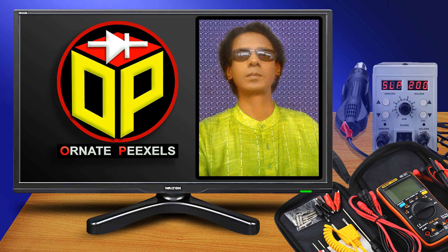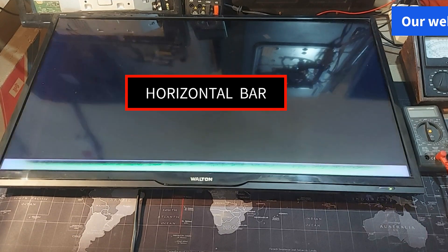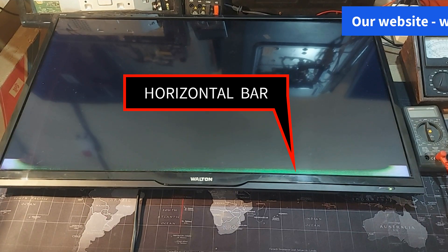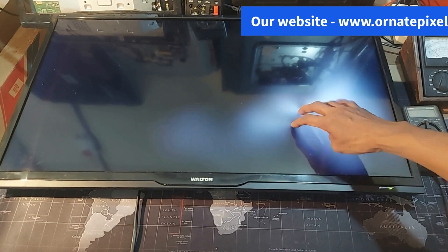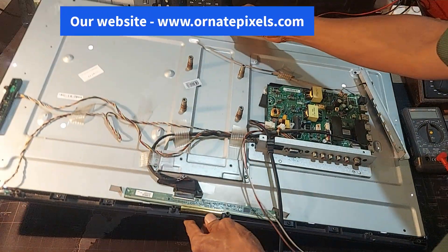After turning on the TV, the horizontal bar appears at the bottom of the screen, then the screen becomes black. So stay with me for a while as I explain nicely what to do. Panel number LSC3210 AN10-H03.